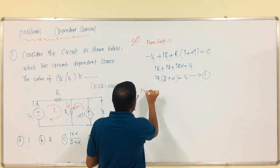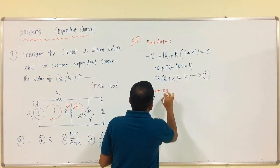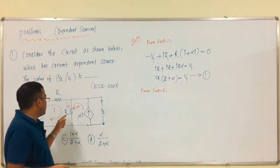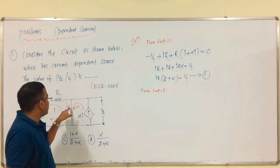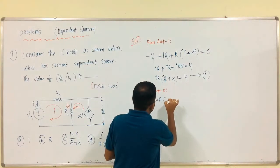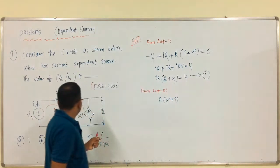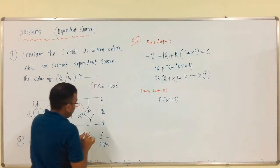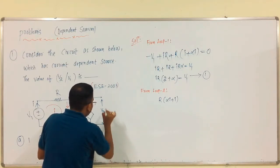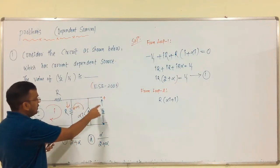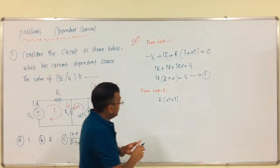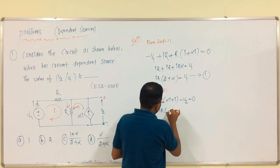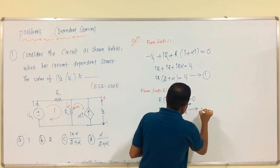From loop 2, we have only one branch. The current in this loop is nothing but alpha·I, and we have only one branch that is R. With respect to loop 2: R into (alpha·I plus I). The voltage across this dependent current source is minus plus, so: minus V2 plus R into (alpha·I plus I) equals 0. Therefore, I·R·(1 plus alpha) equals V2. This is equation 2.